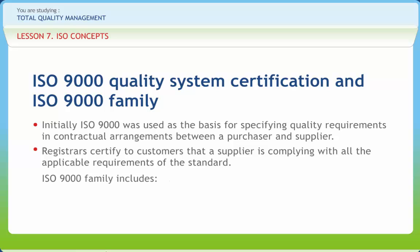ISO 9000 includes the following standards. ISO 9000:2000 Quality Management Systems Fundamentals and Vocabulary covers the basics of what quality management systems are. ISO 9001:2000 Quality Management Systems Requirements is intended for use in any organization which designs, develops, manufactures, installs, and/or services any product or provides any form of service. ISO 9004:2000 Quality Management Systems Guidelines for Performance Improvements covers continual improvement.